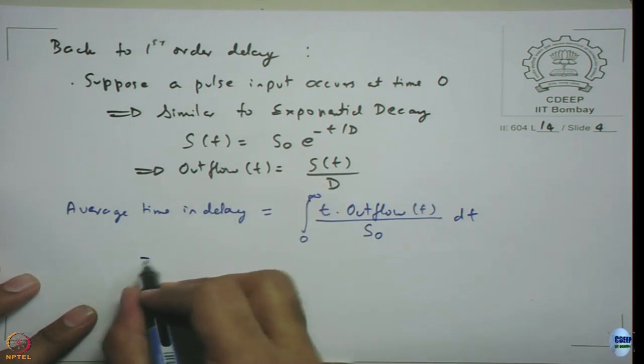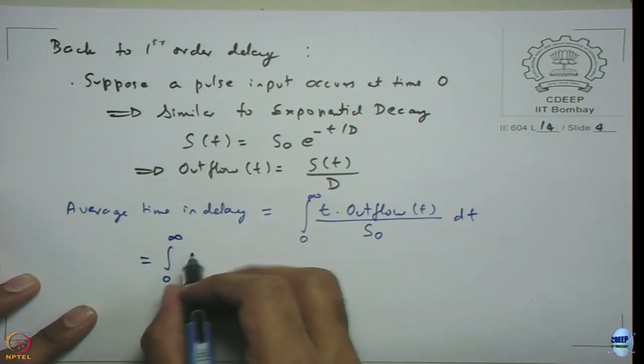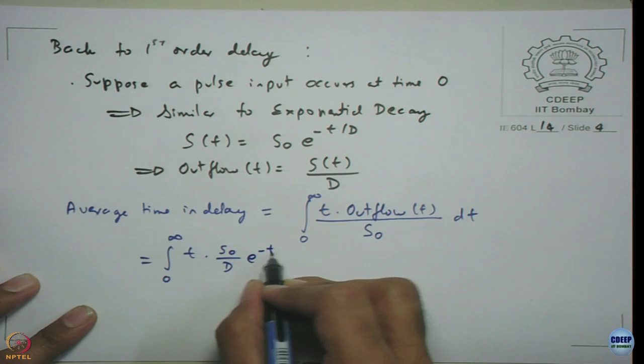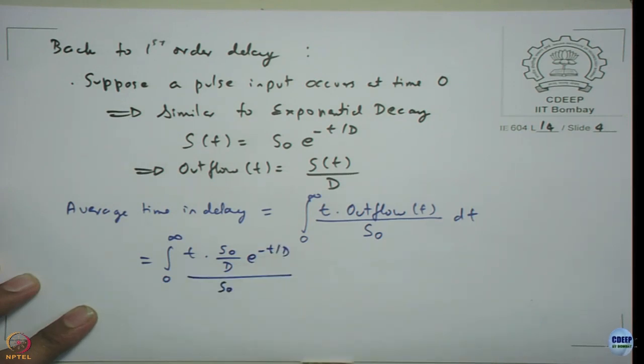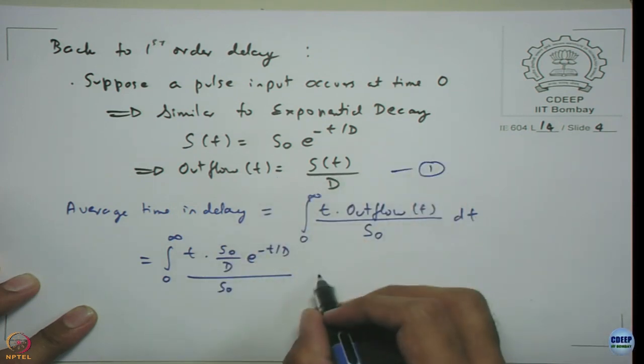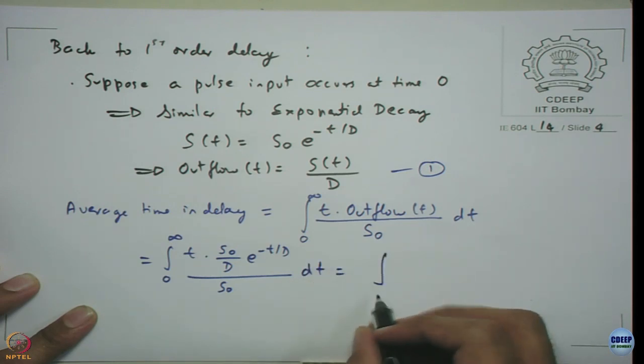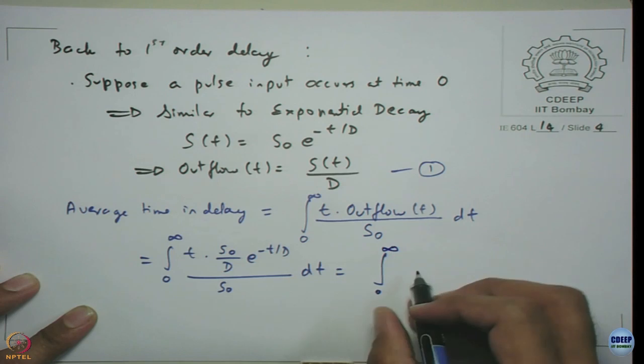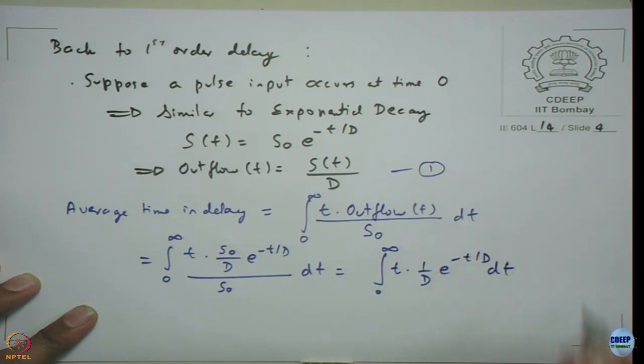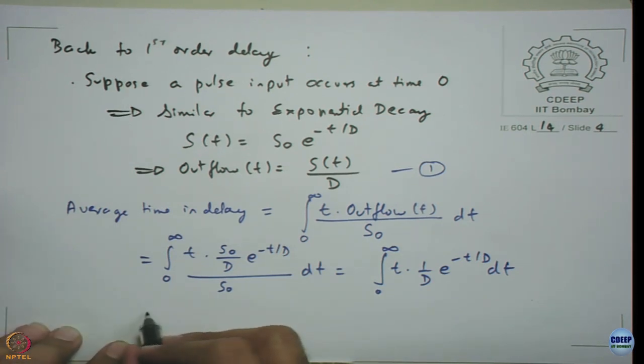From the above equation I can get this: zero to infinity t into s naught by D into e power minus t by D divided by s naught. I am just substituting the equation for outflow from equation 1. This becomes integral zero to infinity dt into t into 1 by D into e power minus t by D dt and this will be equal to D.